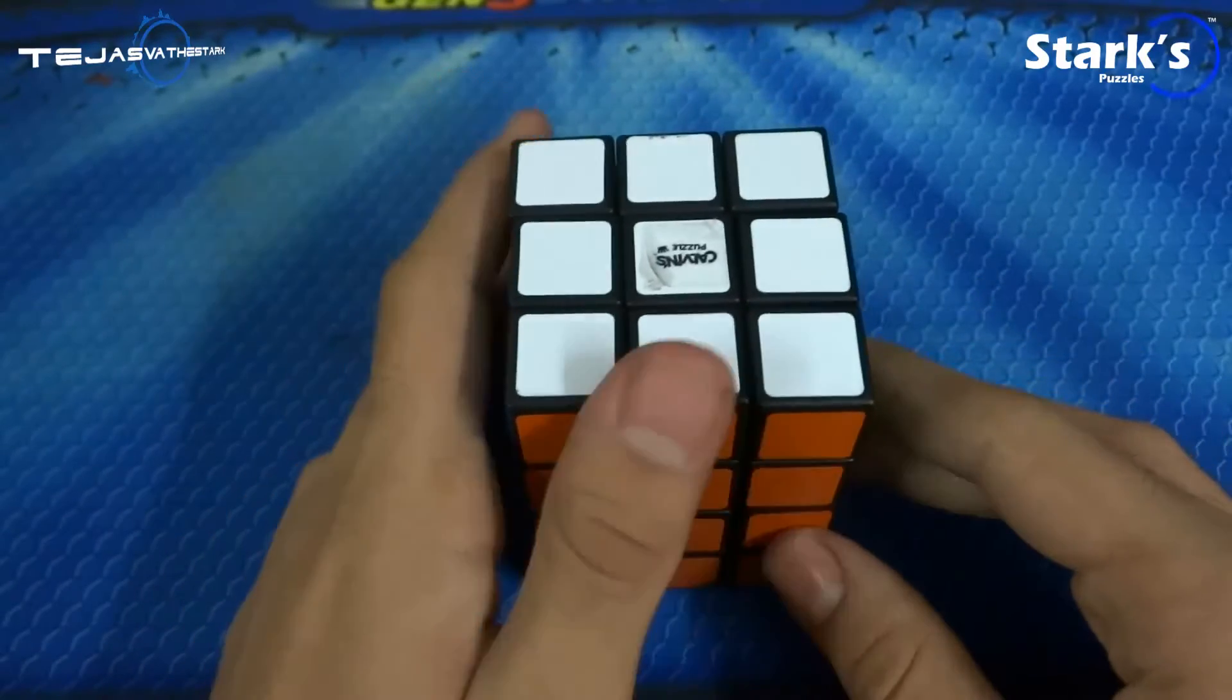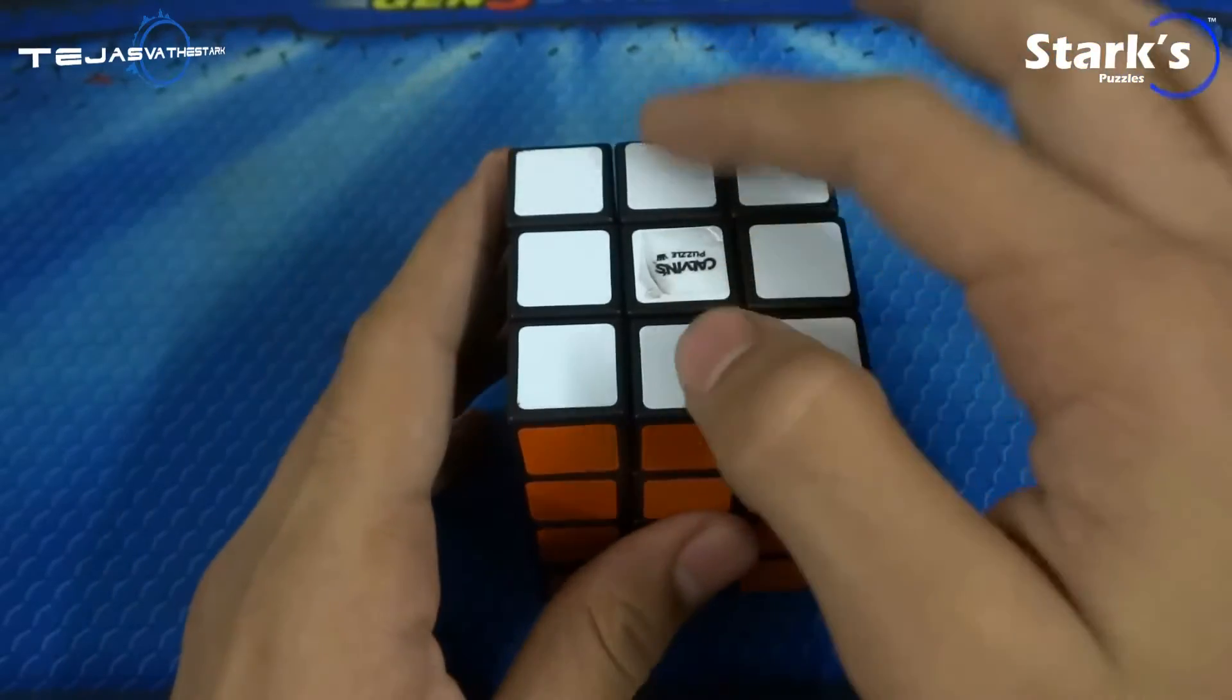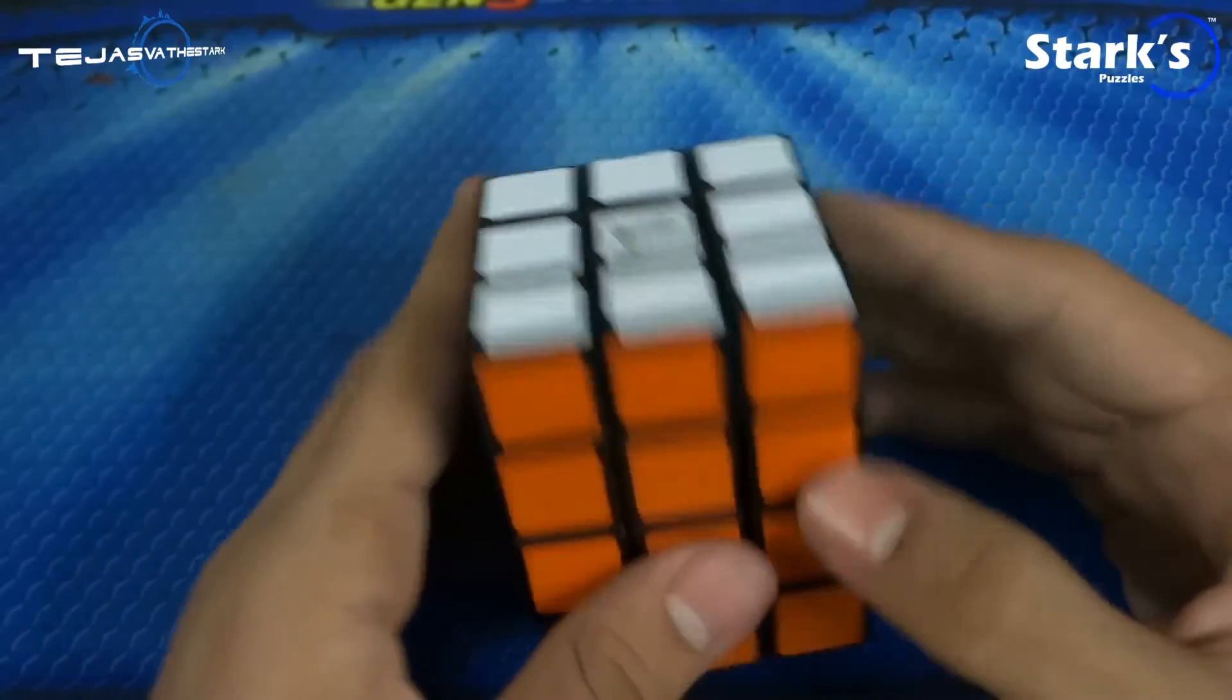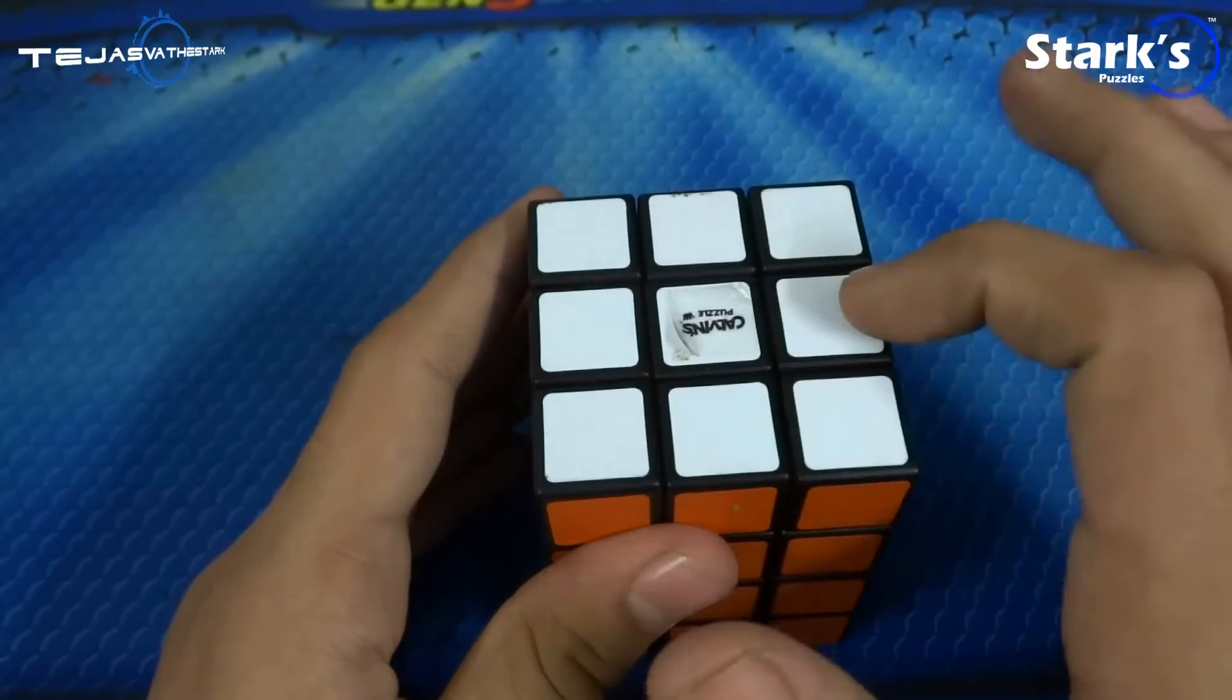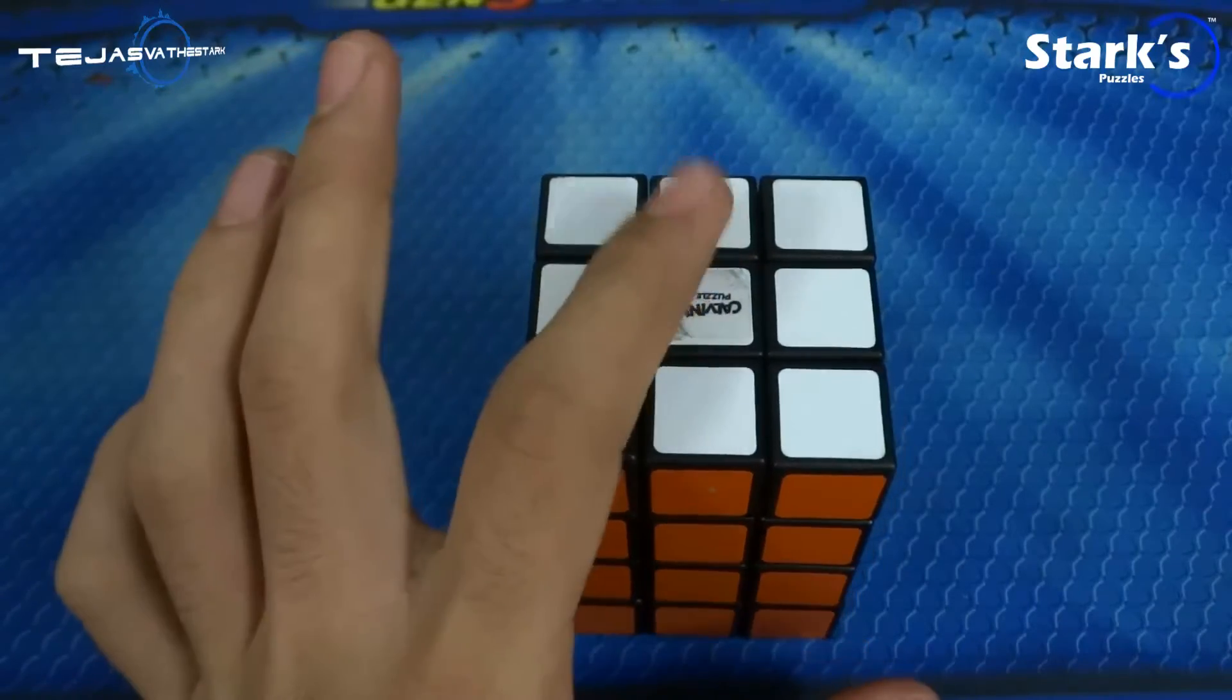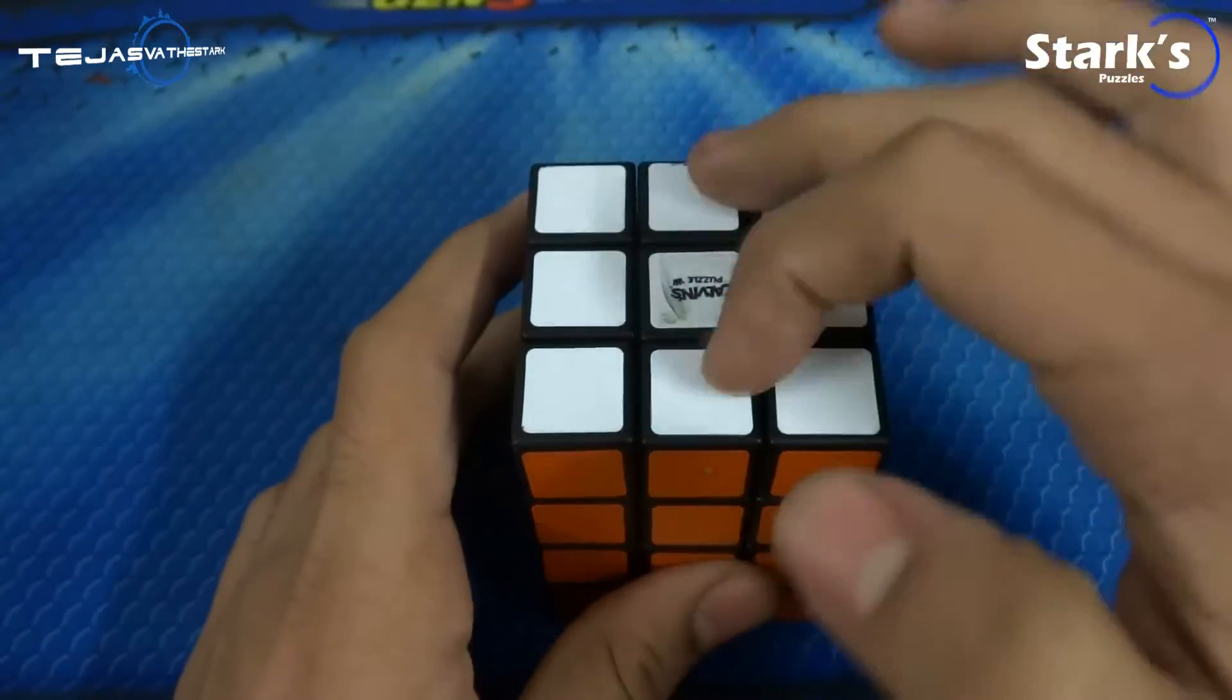The third one is the across edge swap. Basically it swaps these two opposite edges, not all four of them, but only these two. When you actually do this on a three by three, all four of them will be swapped. It's like that PLL that swaps opposite edges over here and opposite edges over here. But in this cuboid, it will only swap these two.